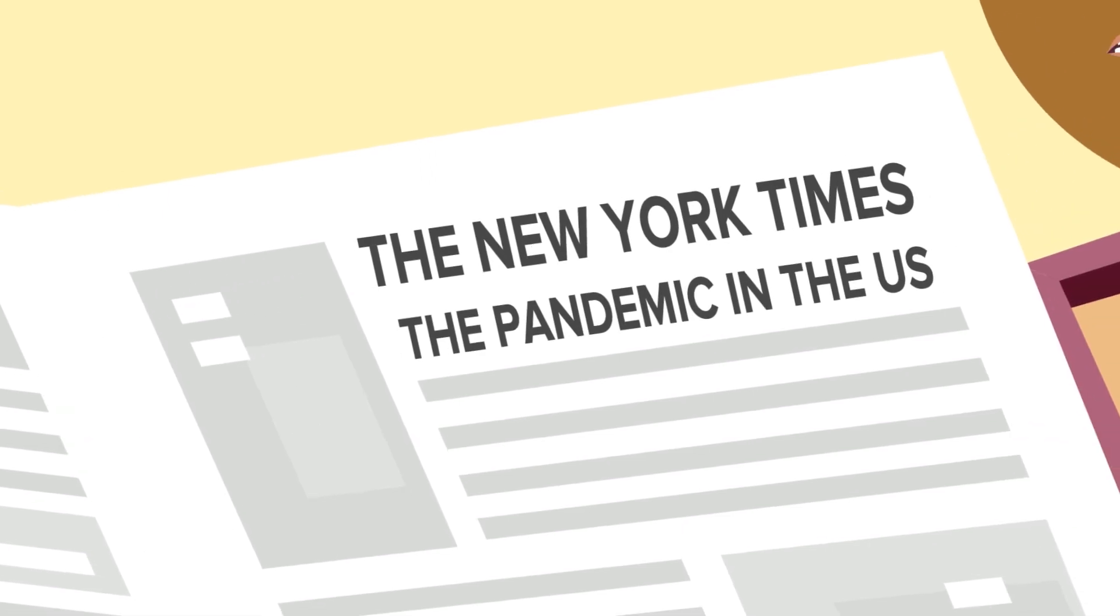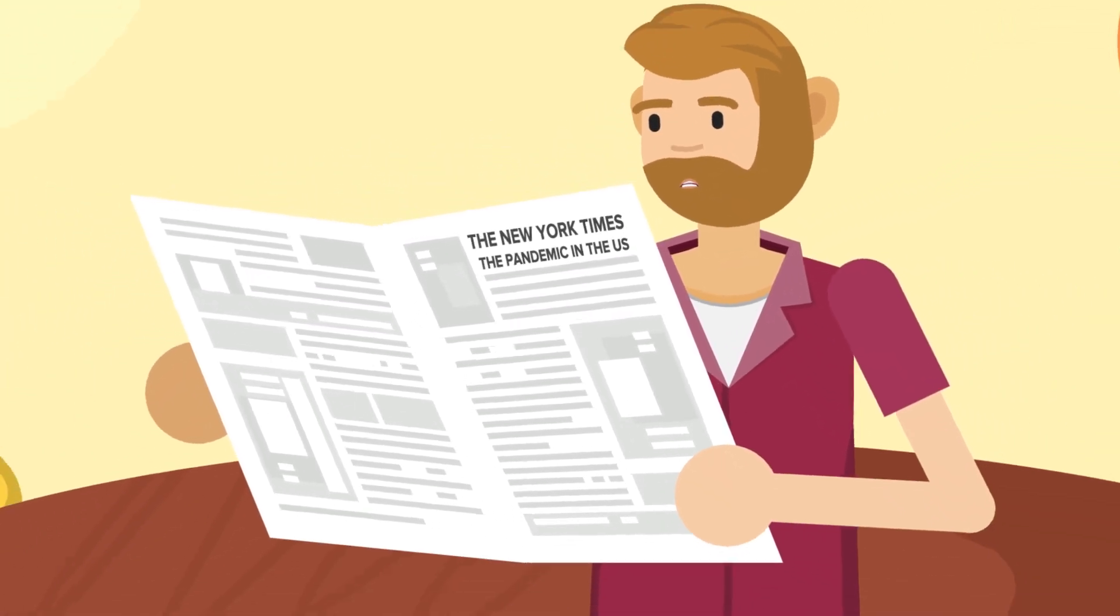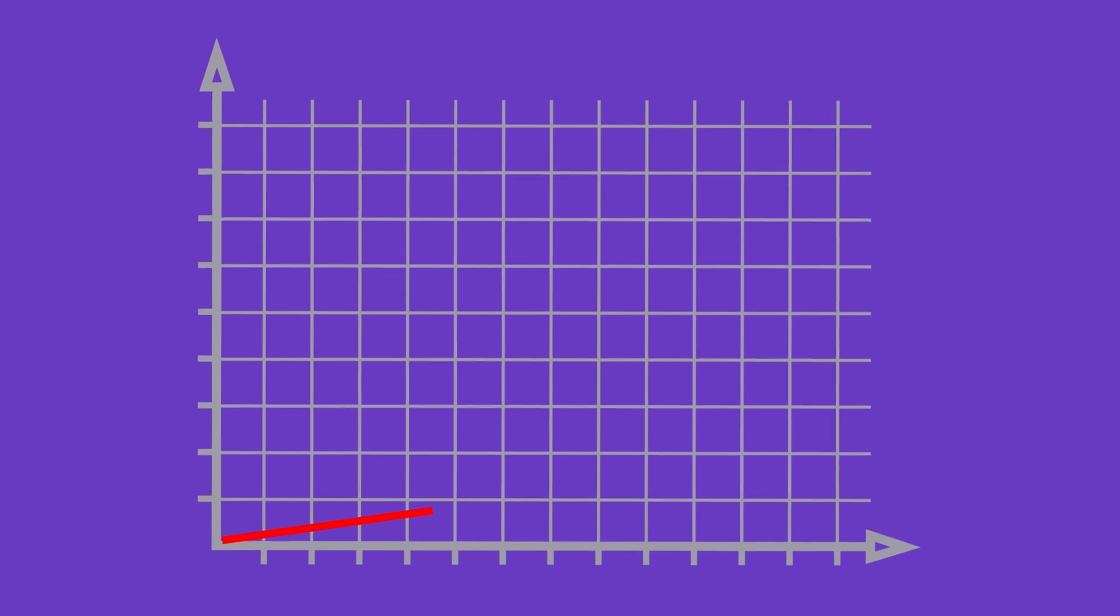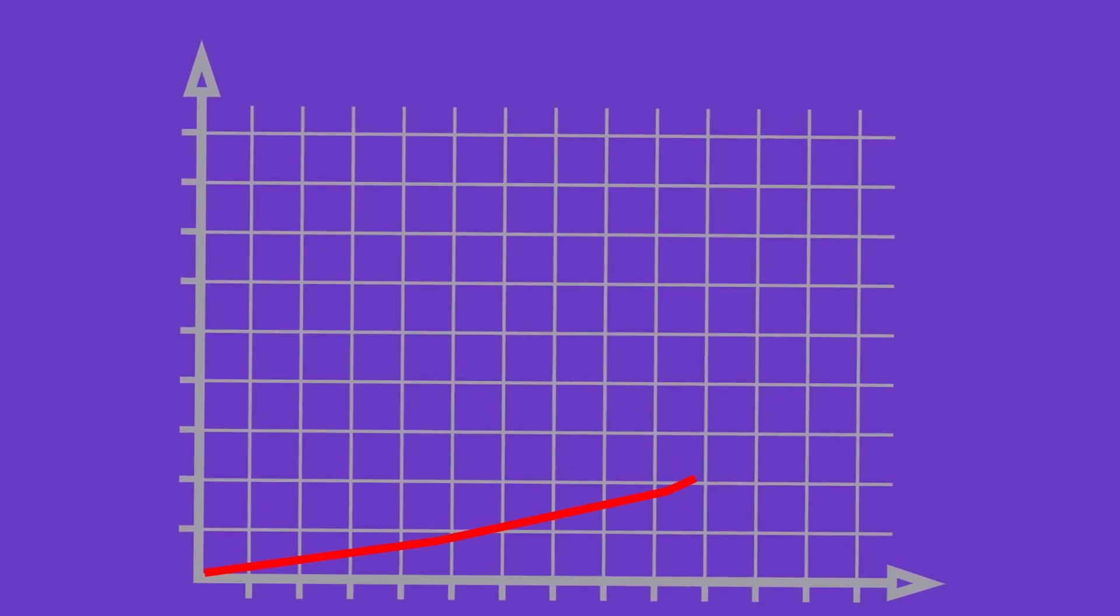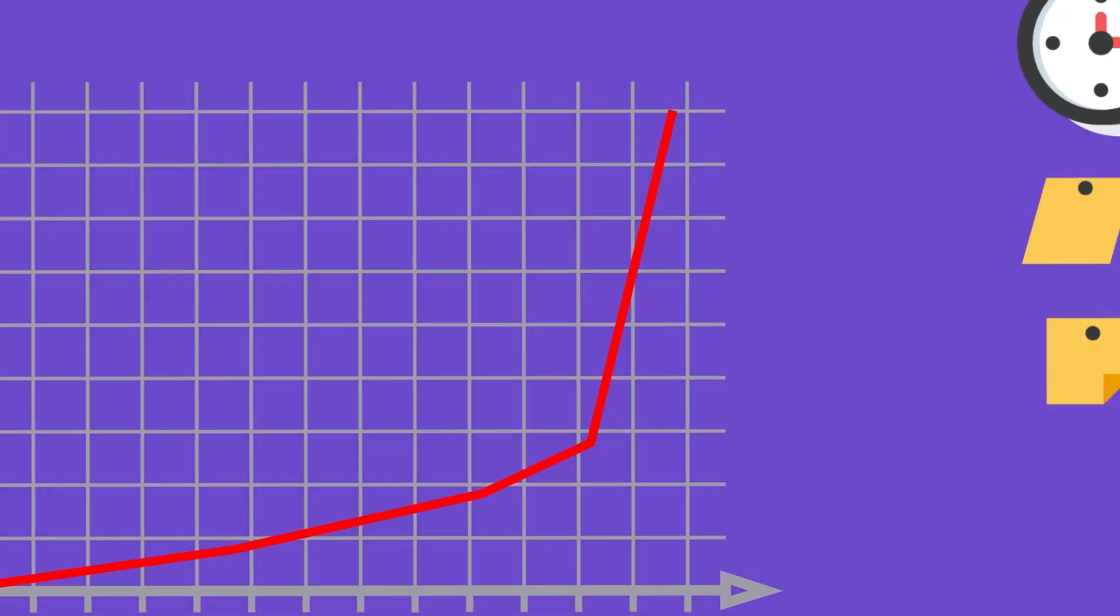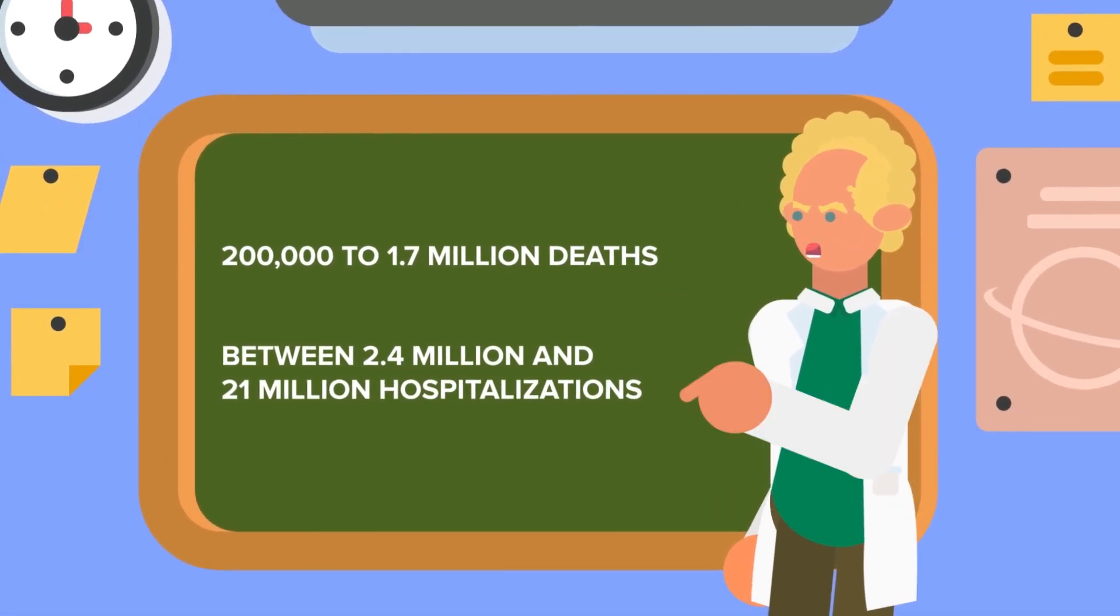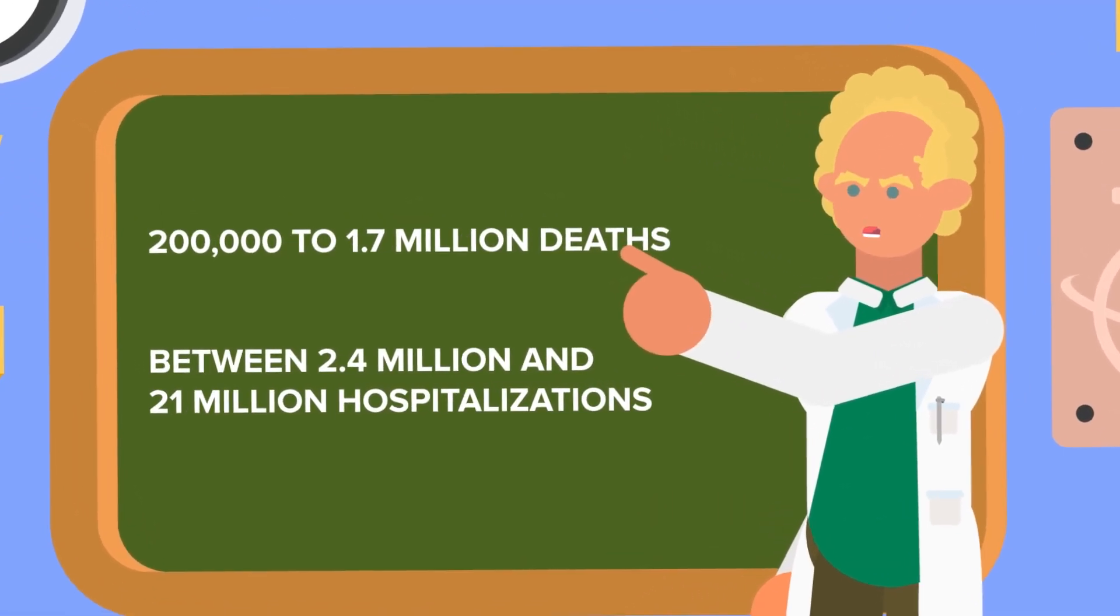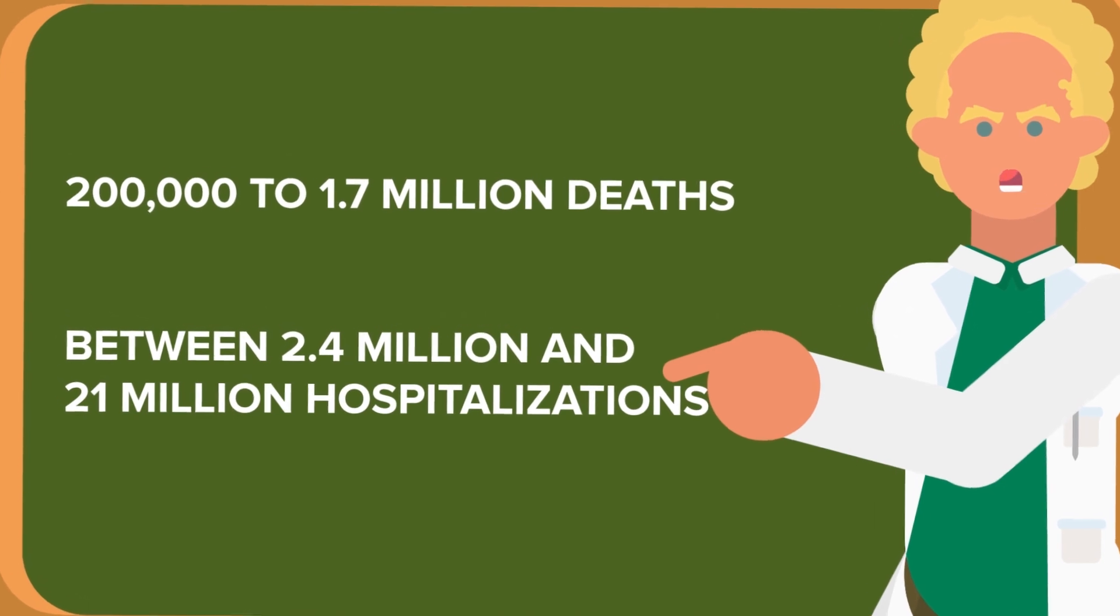The New York Times outlined a numerical worst-case scenario for the pandemic in the US. If things go badly, 160 million to 214 million people could be infected with COVID-19 over a brief pandemic period. This leaves the door open for 200,000 to 1.7 million deaths and between 2.4 million and 21 million hospitalizations.